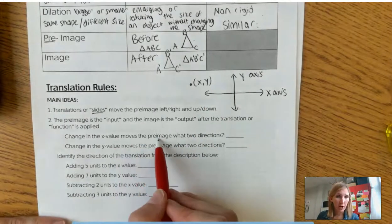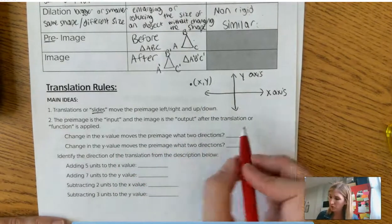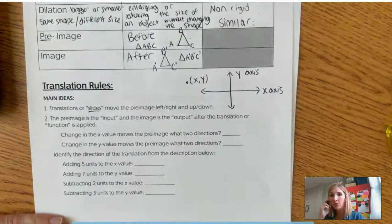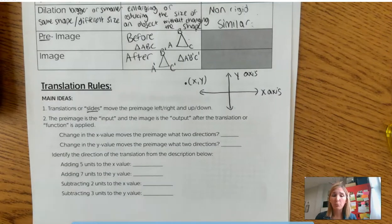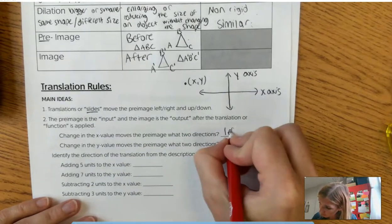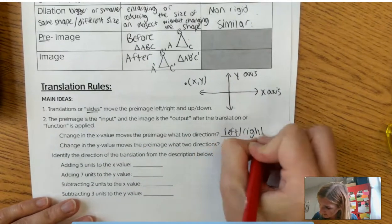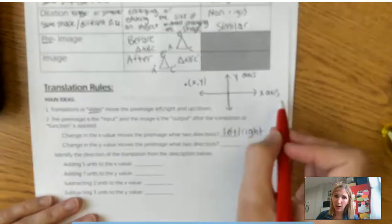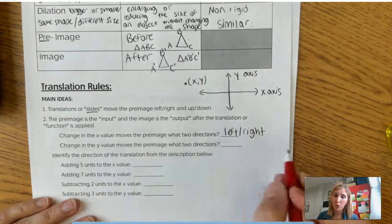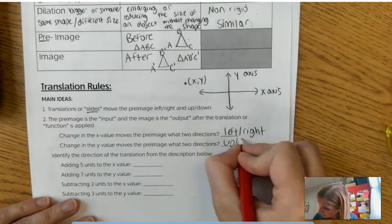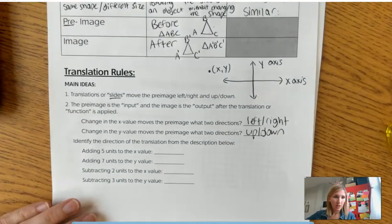Alright. So a change in the x value moves the pre-image what two directions? Well, here's the x-axis, right? So do you think that it moves the pre-image left, right, or does it move the pre-image up or down? I hope you said left or right. So remember, the x-axis here is horizontal, so you're either moving left or right. So that means the change in the y moves the pre-image up or down.